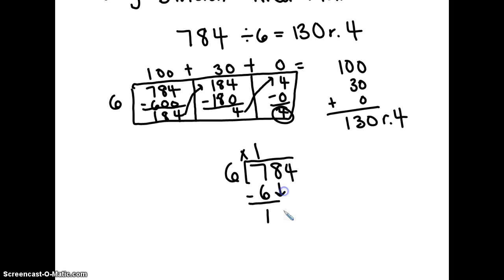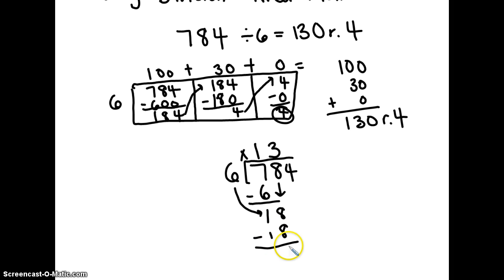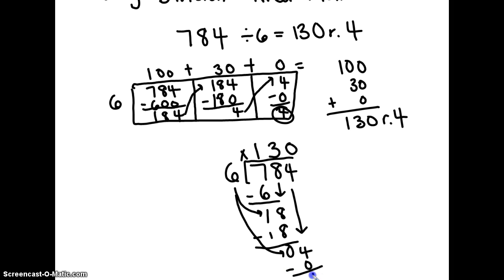Bring down the eight. How many times can six go into eighteen? Three times. Six times three equals eighteen. Bring down the four. How many times can six go into four? Zero times. Six times zero equals zero. Subtract and it equals four, so the remainder is four.